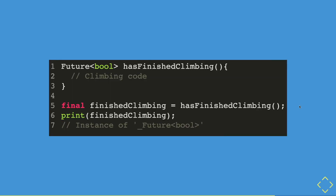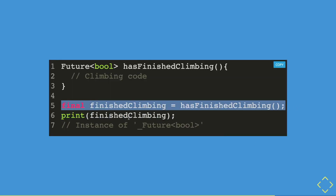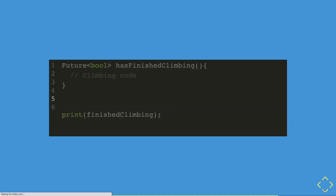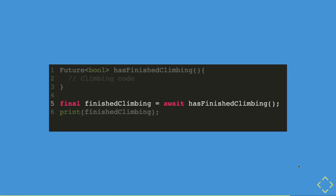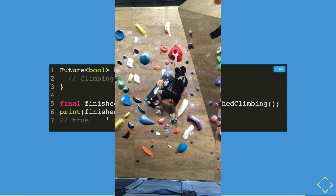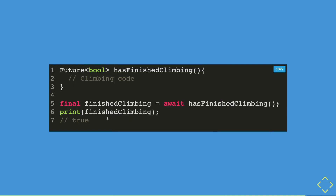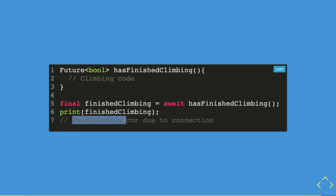Now we're going to make this line of code into a completed state by adding the await keyword. This allows us to wait for the future to finish completion. When we are successful, we will manage to get a value out of it, which is the boolean true. Or otherwise, for some reason, we will have an error that usually says exception, along with an error message explaining why the error state happened.